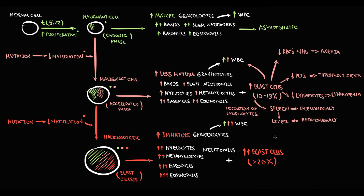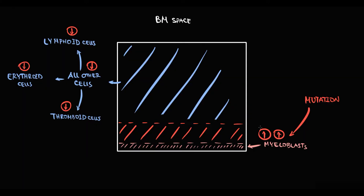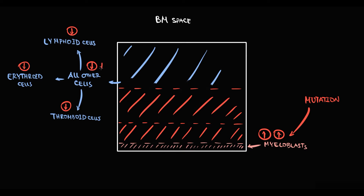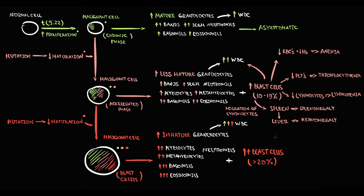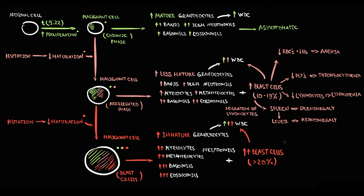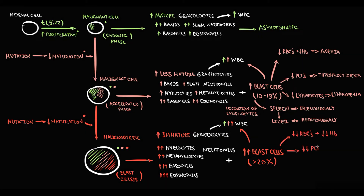The higher the number of blast cells, the less space is left for normal cells, so more normal cells are forced to leave the bone marrow. Every pathological alteration that occurs during the accelerated phase now becomes more severe. Anemia becomes more severe, thrombocytopenia worsens, lymphopenia worsens, and also the size of the spleen and liver increase further.